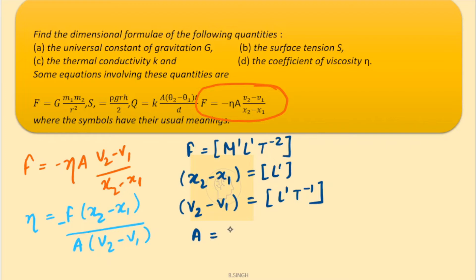A here stands for area. So, area of cross section will have the dimensions L square.